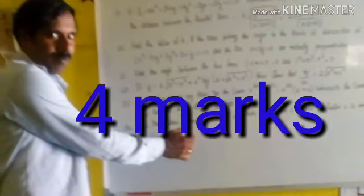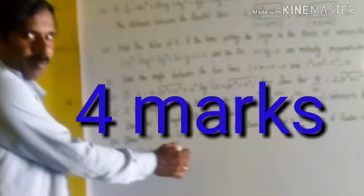11th Question: Find equation of the locus of p such that pa square plus pb square equal 2c square, a of a comma 0, b of minus a comma 0.